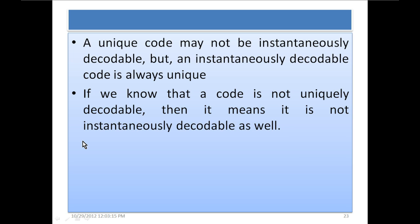A unique code may not be instantaneously decodable, but an instantaneously decodable code is always unique. If a code is instantaneously decodable, then it must be unique, because without being unique a code can never be instantaneously decodable. But if a code is unique, it is not necessarily instantaneously decodable. If a code is not uniquely decodable, then it is not instantaneously decodable either — we don't need to check further.